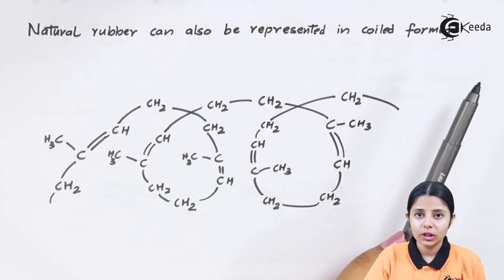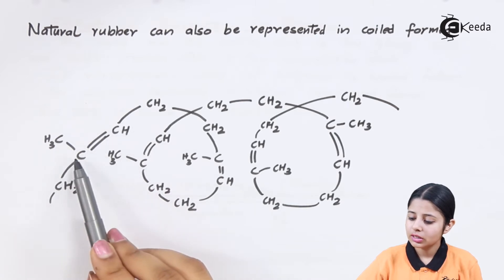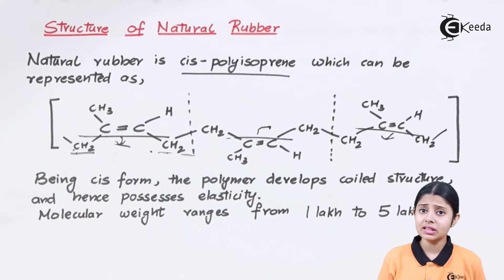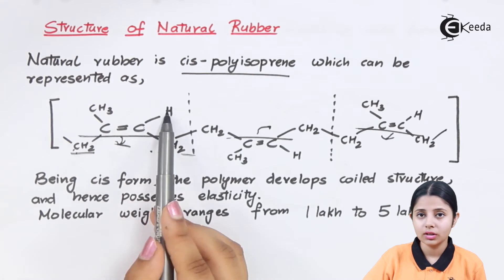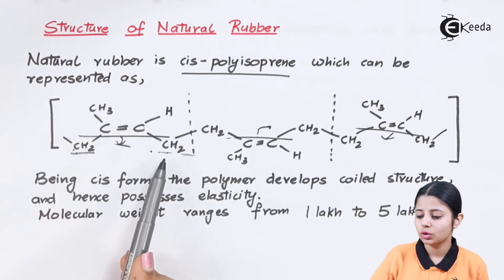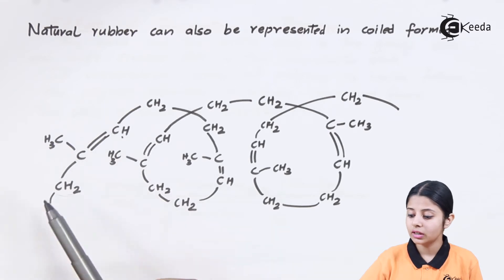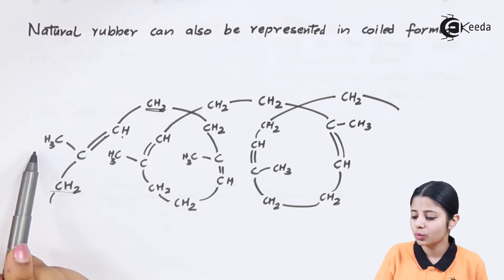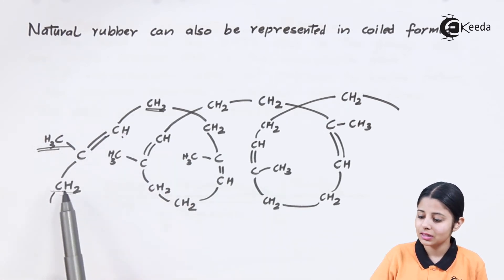Natural rubber can also be represented in a coiled form. In the coiled format, I have C=C with an H attachment. This is CH3, and there is CH2 here and CH2 here. In the coiled form, the H is not written distinctly — it is just attached to the C. Below that I have CH2 and CH2, and above that I have CH3. The below CH2 comes over here, the other CH2 comes here, and the CH3 is on top.